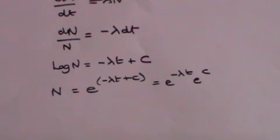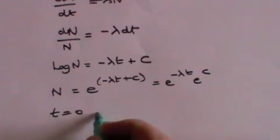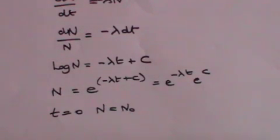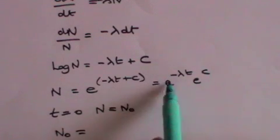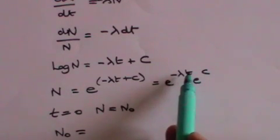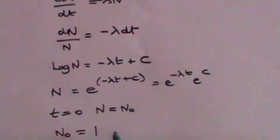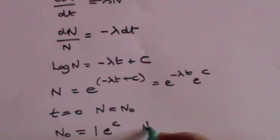At t equals 0, in other words, at the start of the process, N is the original number of atoms, which we will call N₀. So when t is 0 in this formula, we find that N becomes N₀, e to the minus lambda t is e to the minus 0, which is 1, times e to the c. And therefore we get that N₀ equals e to the c.